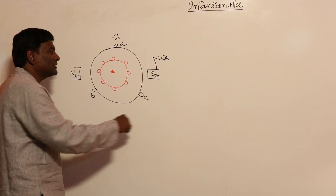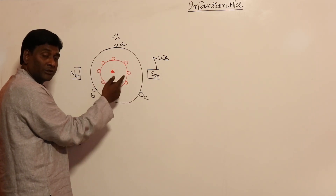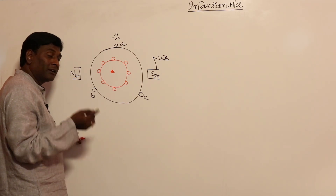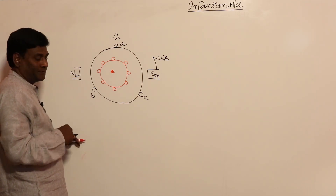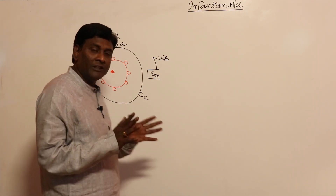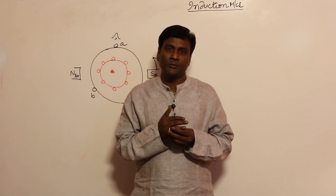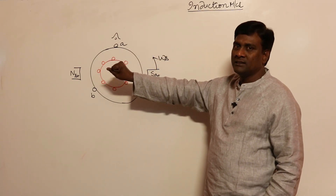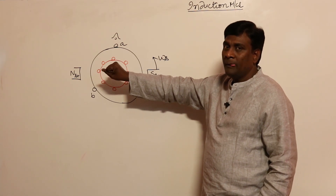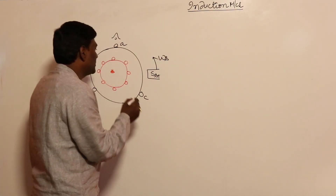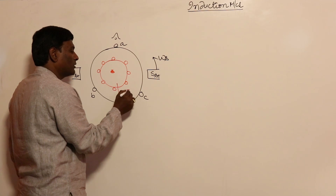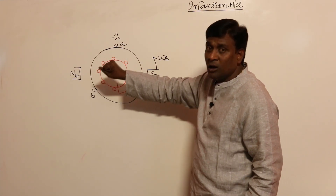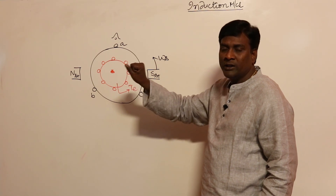Because of this rotation, voltages are induced in the rotor conductors. Because of those voltages, currents flow. Because of those currents, torque is produced — provided rotor resistance is non-zero. If rotor resistance exists, torque will definitely be produced. Now, if the rotor is at standstill, torque is still produced in the same direction as the RMF rotation. If I hold the rotor firmly to prevent rotation, a twisting moment will be felt in that direction.